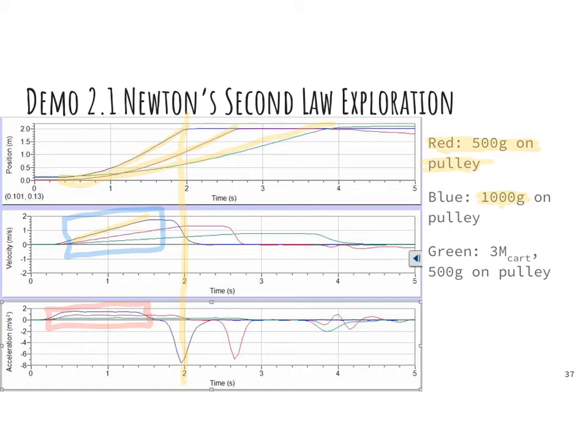And then the last situation I have is I'm going to go back to my original 500 grams, but I'm going to triple the mass of the cart. So I'm going back to having the same force as the original situation, but now the mass that it's trying to pull is three times as large. We see on the middle graph and on the bottom graph that we get this much gentler slope indicating a lower acceleration. So we know that a larger force causes larger acceleration, and we know that a greater mass causes less acceleration.